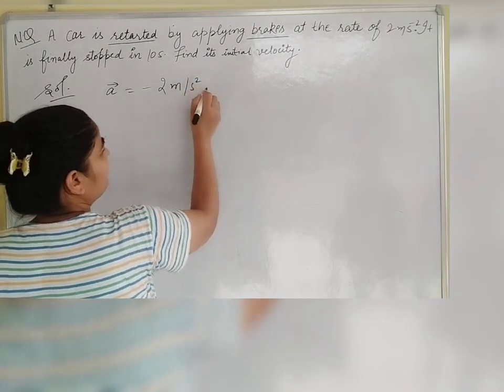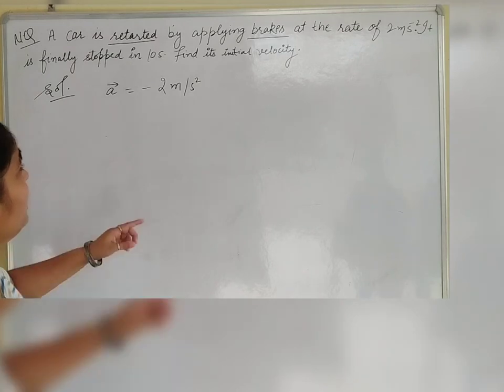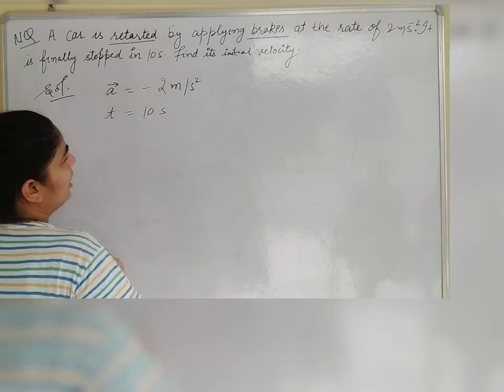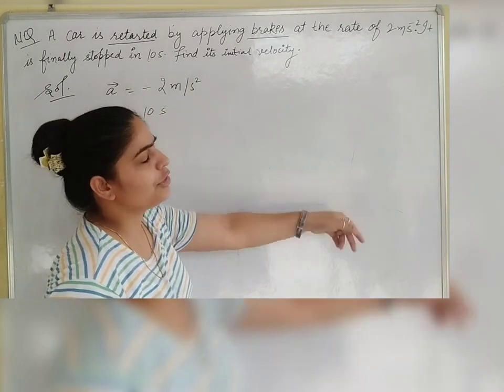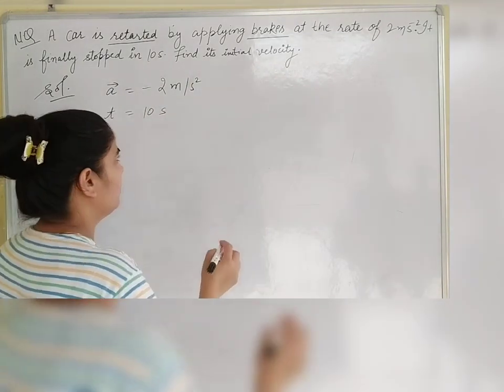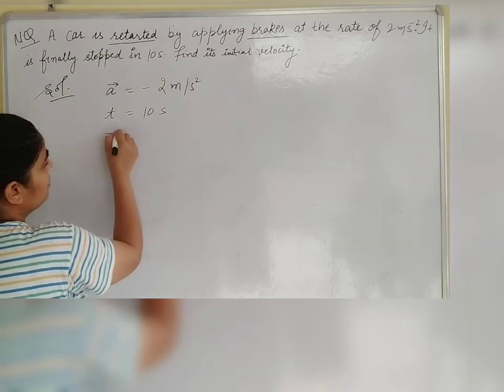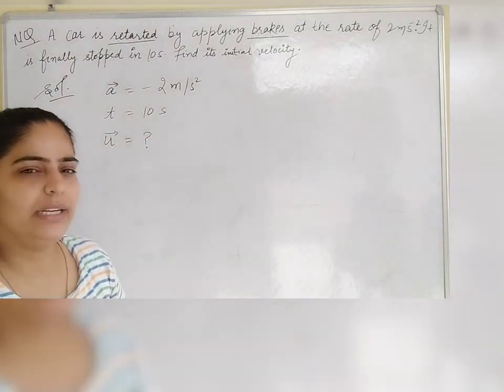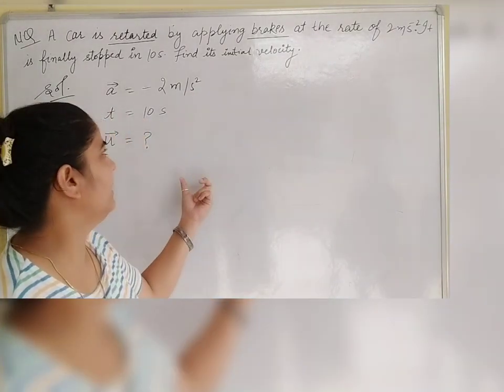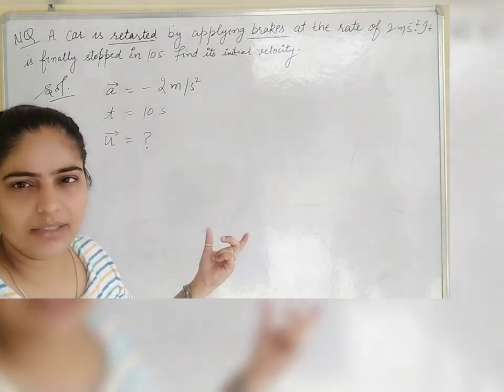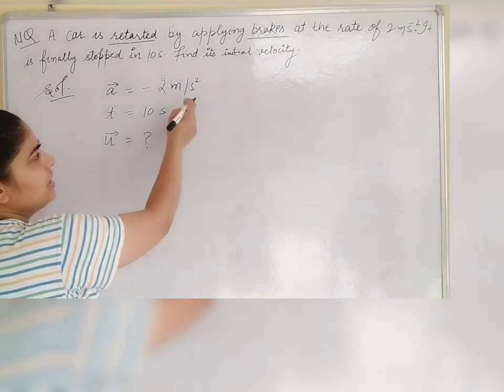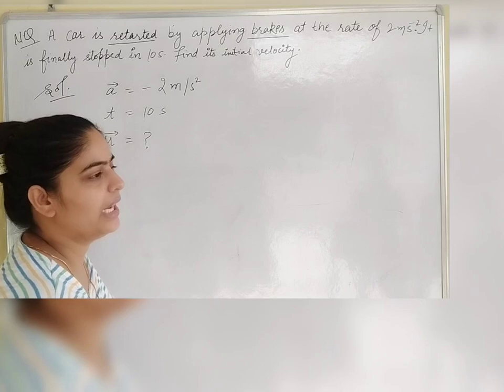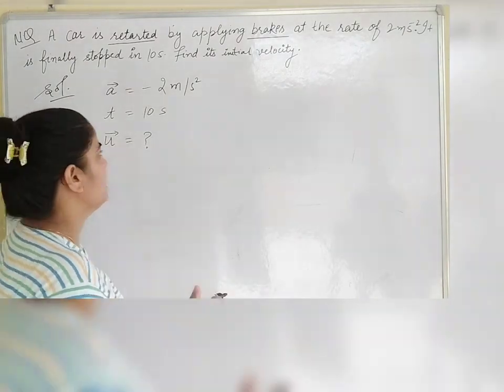The second thing is time. How much time did it take? The time is 10 seconds. And we have to find its initial velocity. Now we have written the points. Let's look at units. If there is a change in unit, but there is no change - seconds are seconds. We have no problem. Now let's look at the formula.